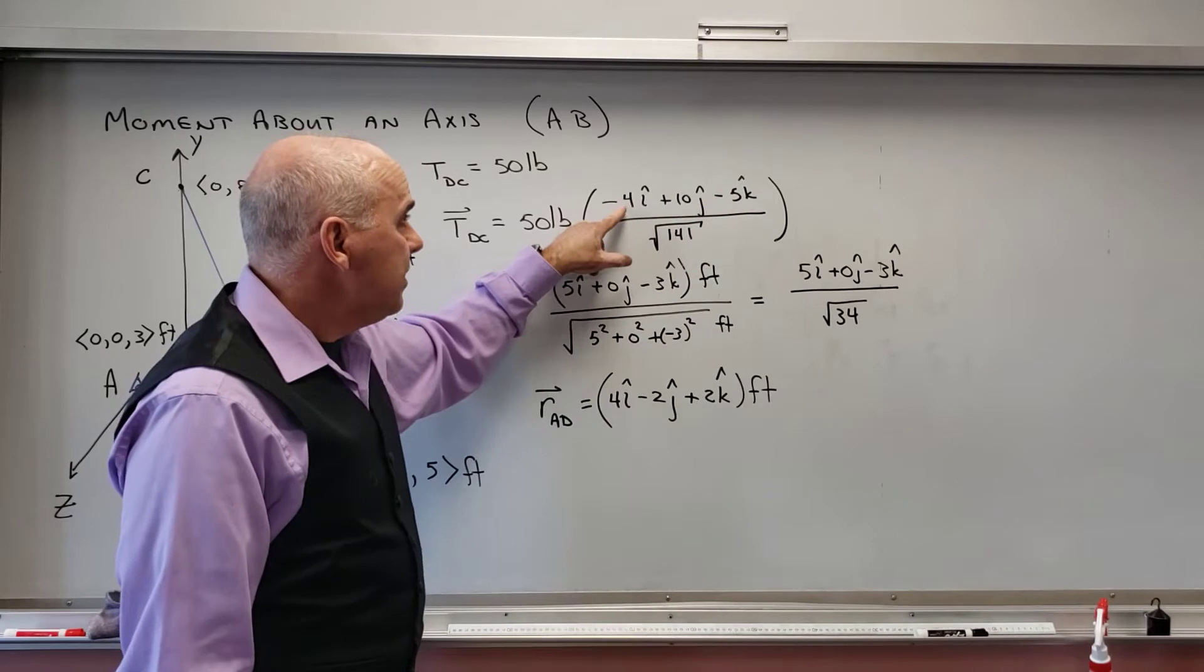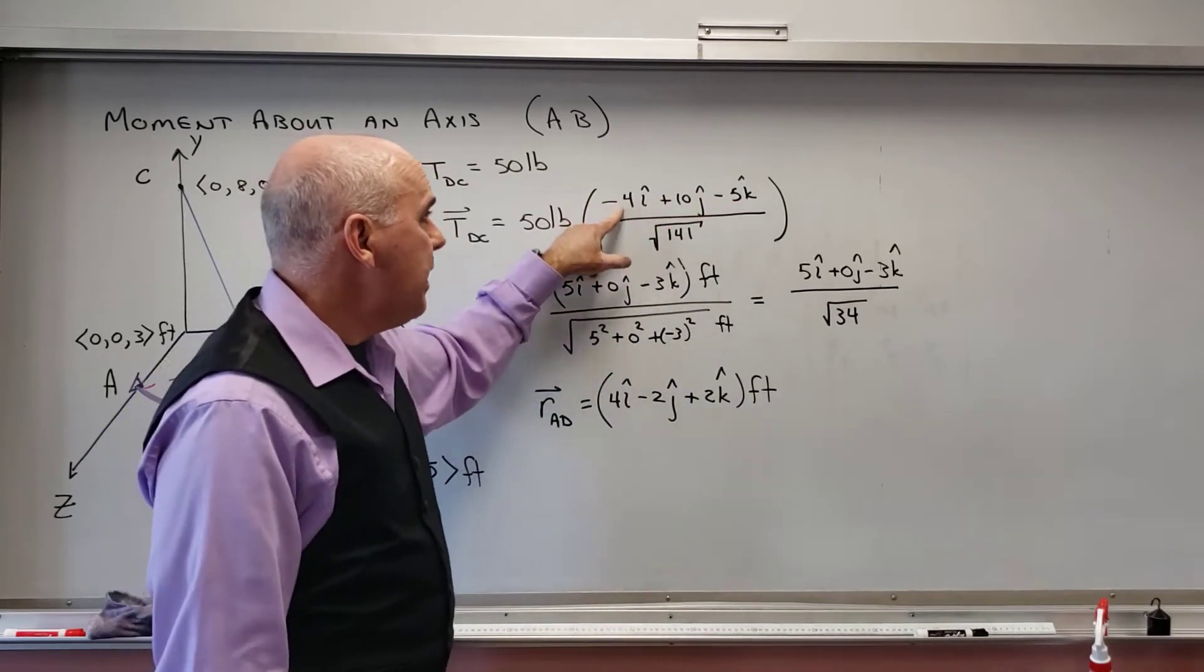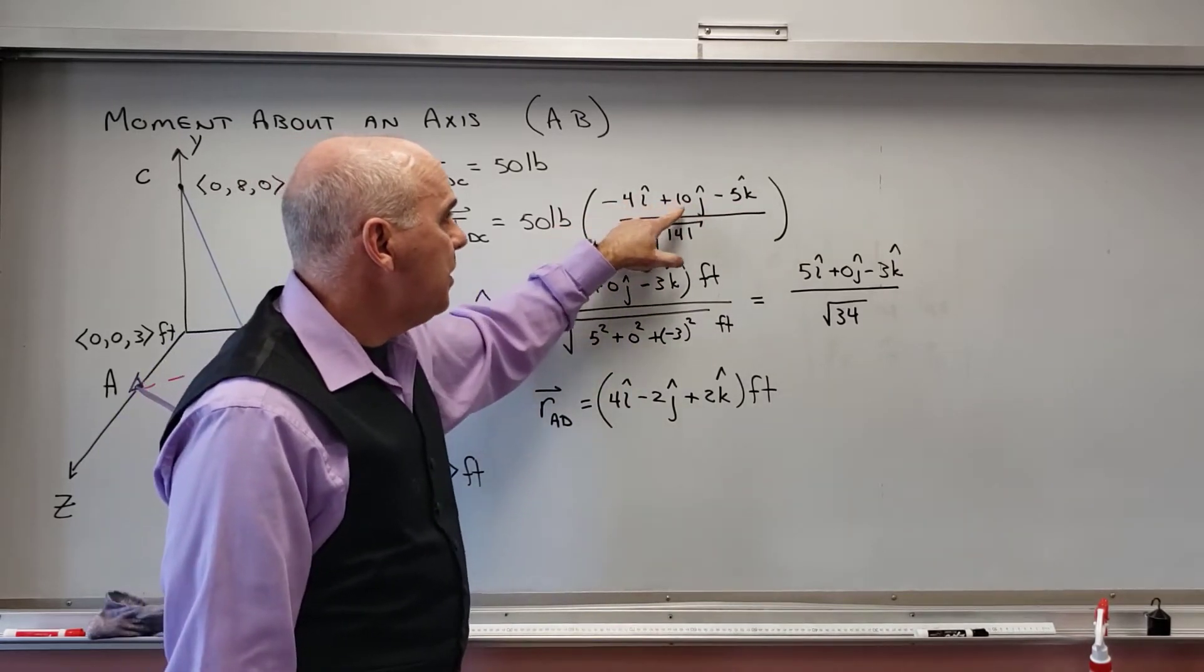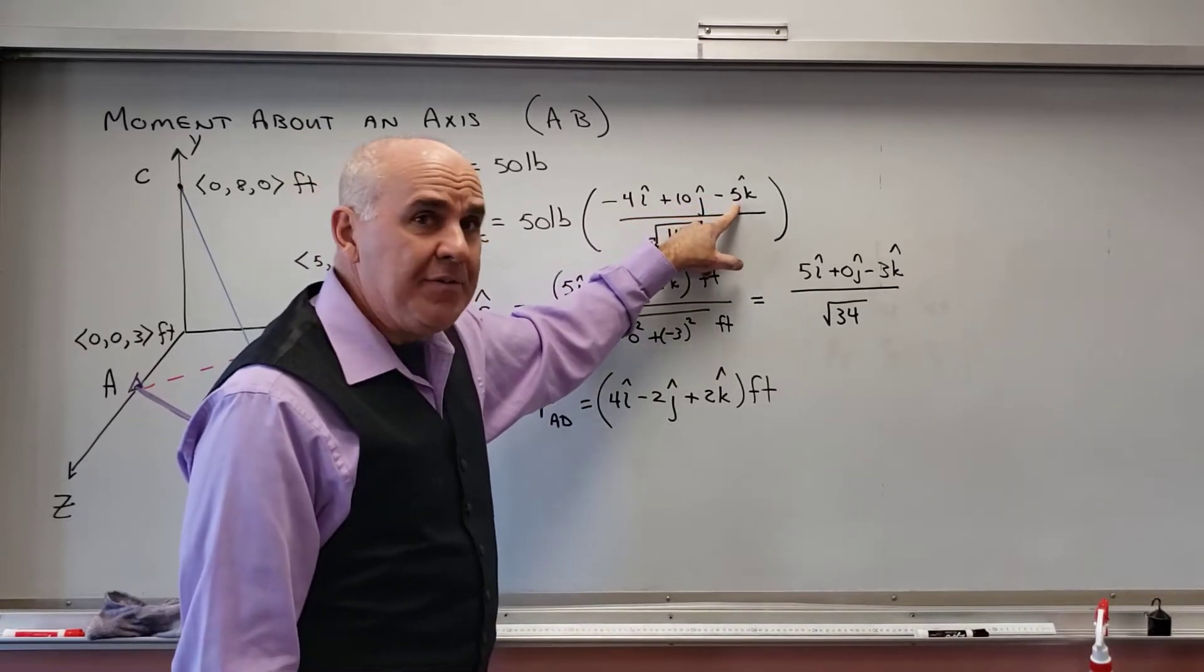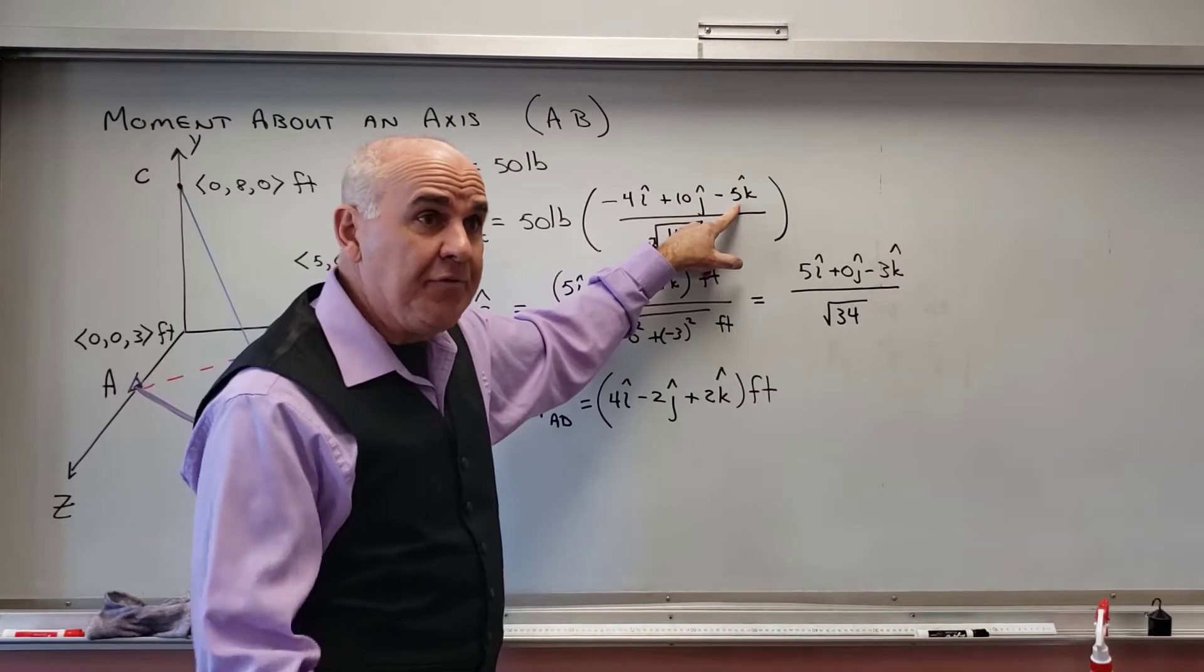But then when I take the magnitude of this, that's negative 4 squared, which is 16, plus 100, which is 116, plus negative 5 squared, which is 25.